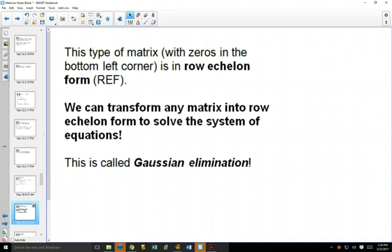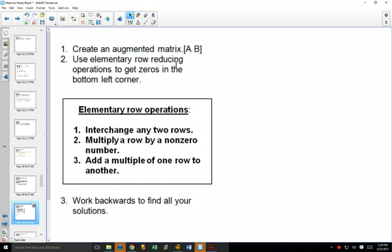So what we're going to do is we're going to learn matrix operations and with our matrix operations, try to get it into that row echelon form. And that process is called Gaussian elimination. So what does that look like?